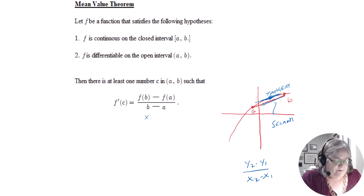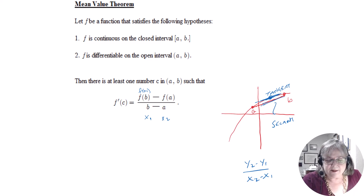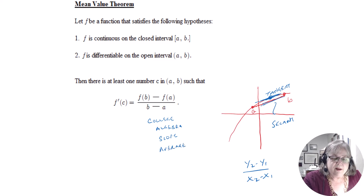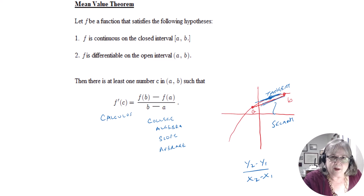This part on the right, if you remember from college algebra, you had y2 minus y1 over x2 minus x1 — that's what this says. So f of b is x2, and f of a is the y that goes with x1. This is the difference in the y's over the difference in the x's. So this is the college algebra version of the slope, which is actually an average slope. This is the calculus version, because the derivative gives you the equation for the slope anywhere along the curve.